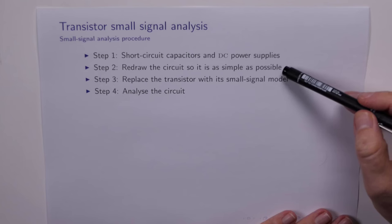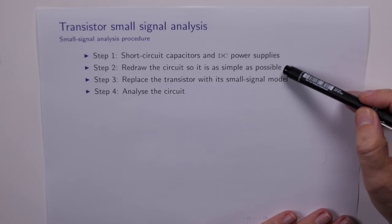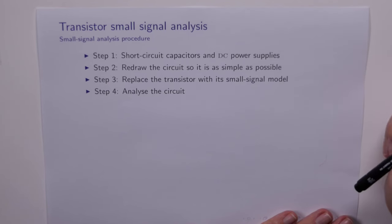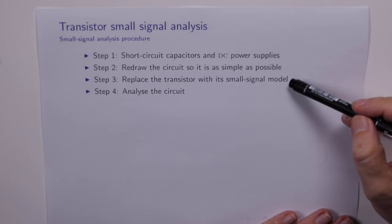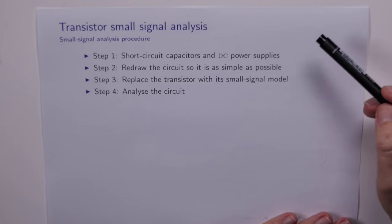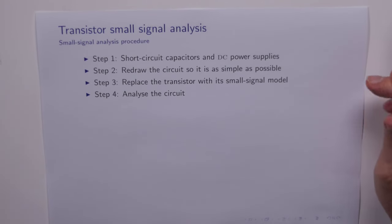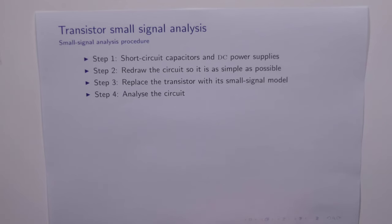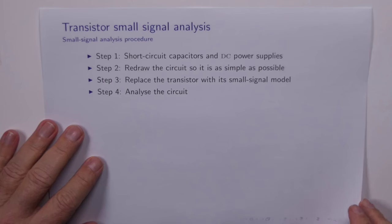We then redraw the circuit so that it's as simple as possible — the simpler the circuit, the less chance we'll have of making an error. We then insert the small signal model for all of the transistors and then we analyze the circuit. It usually means we're interested in things like the small signal voltage gain, the input resistance, and the output resistance. There are a few other things like current gain and power gain but we're not really interested in those this year.